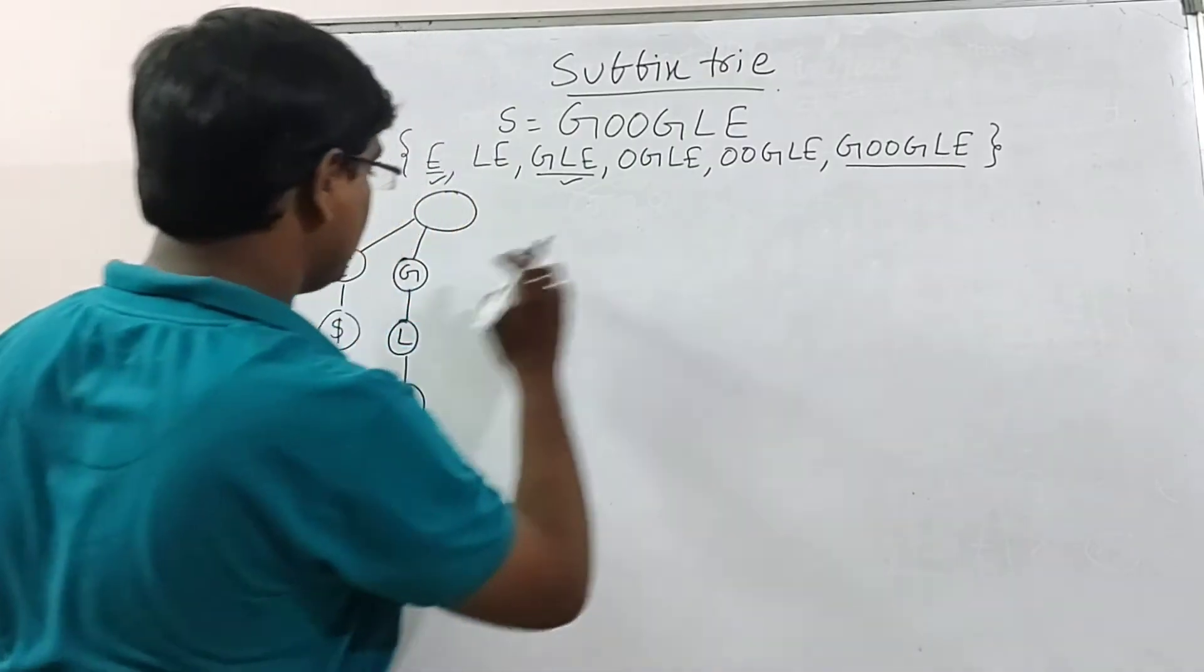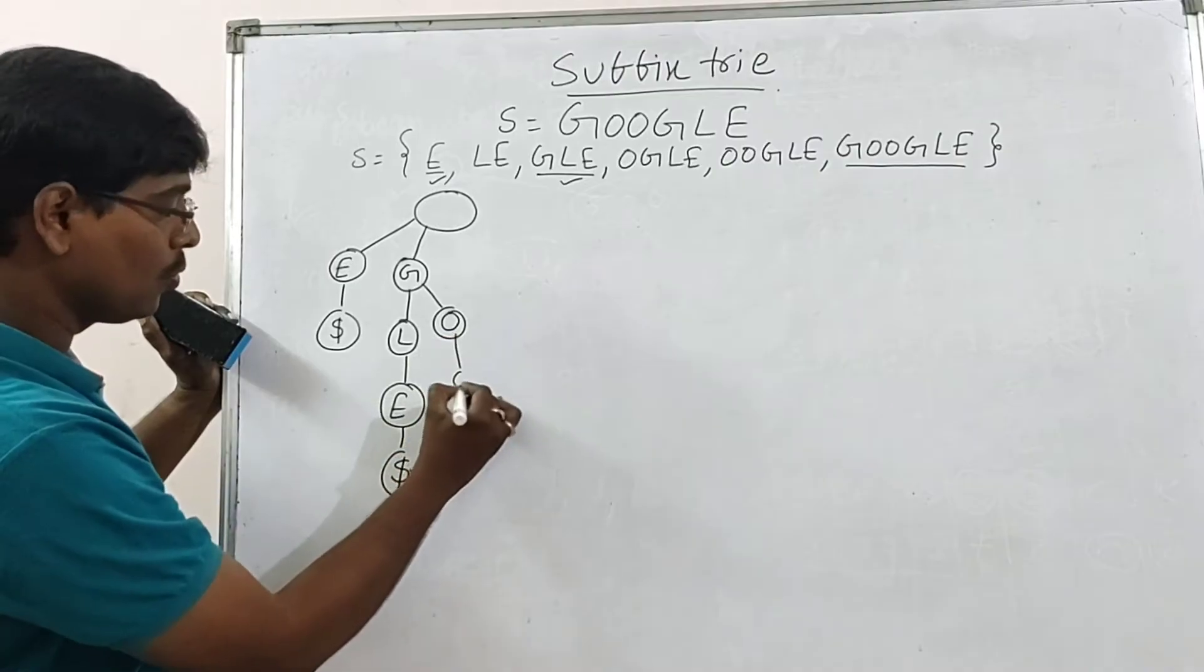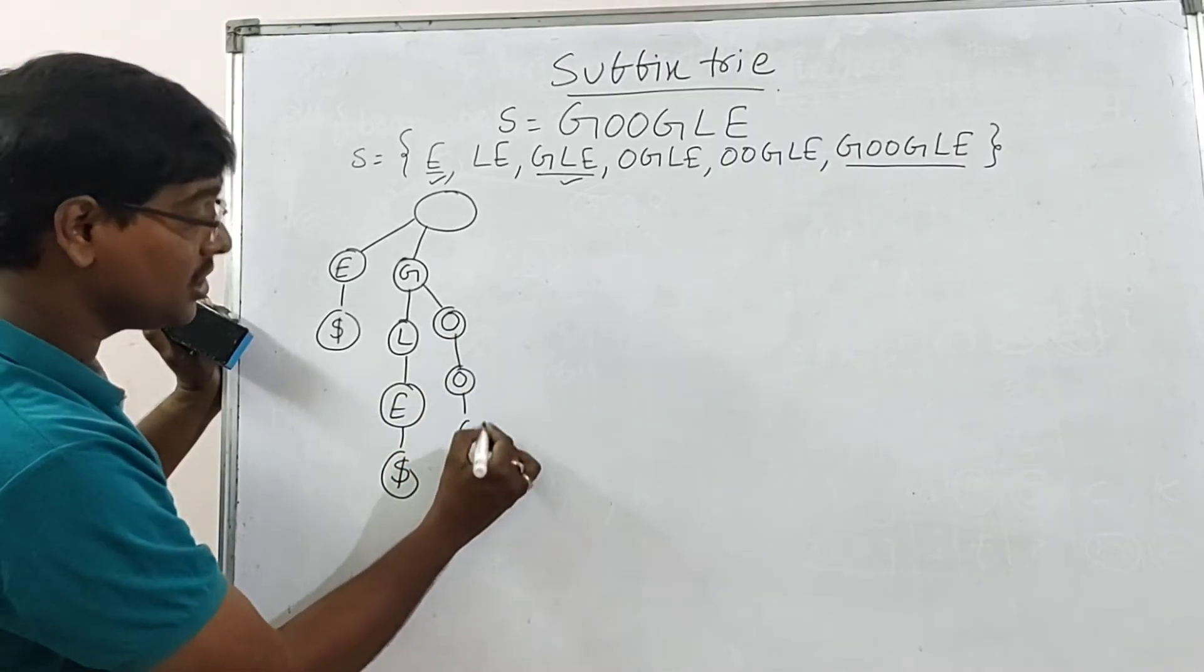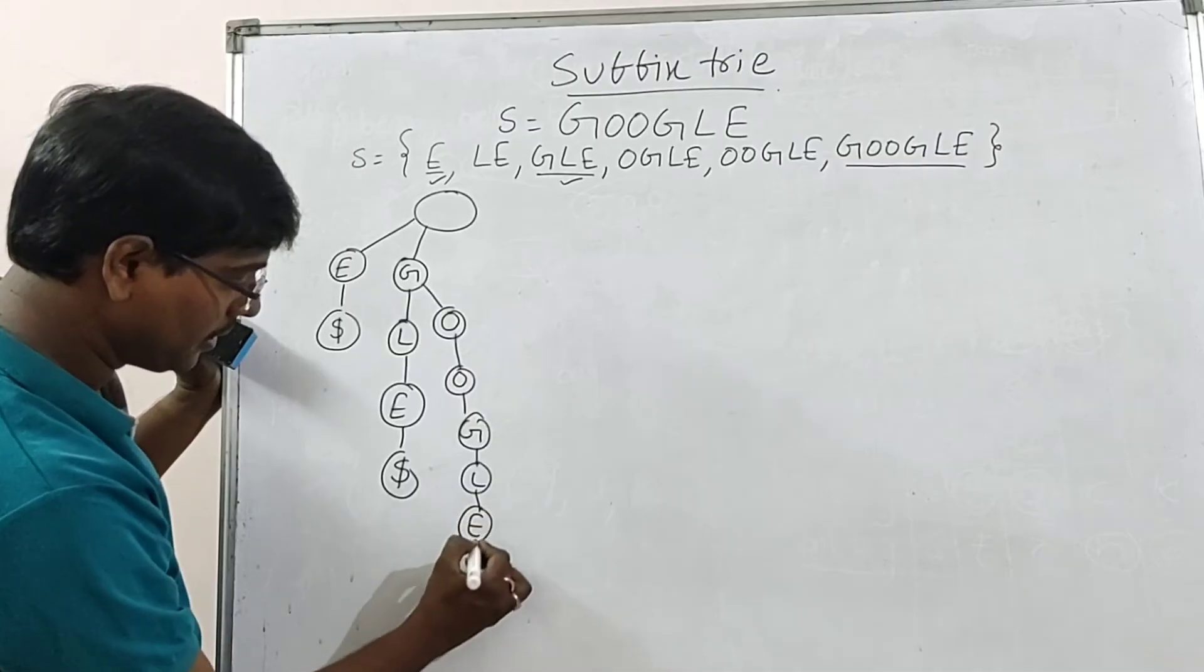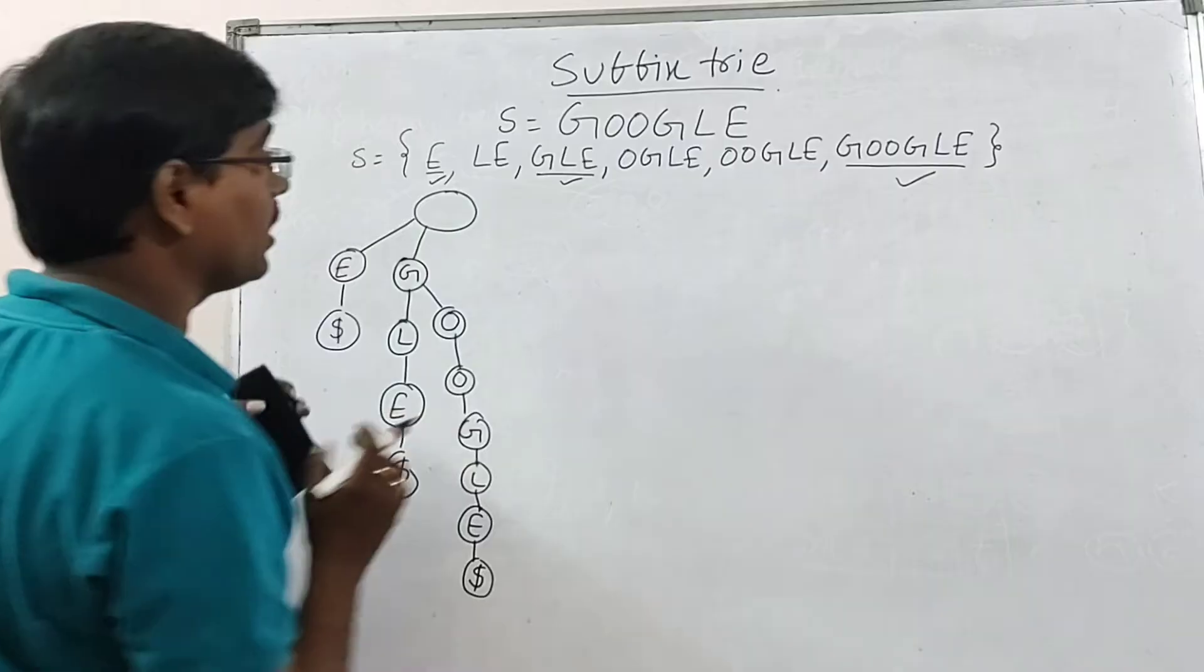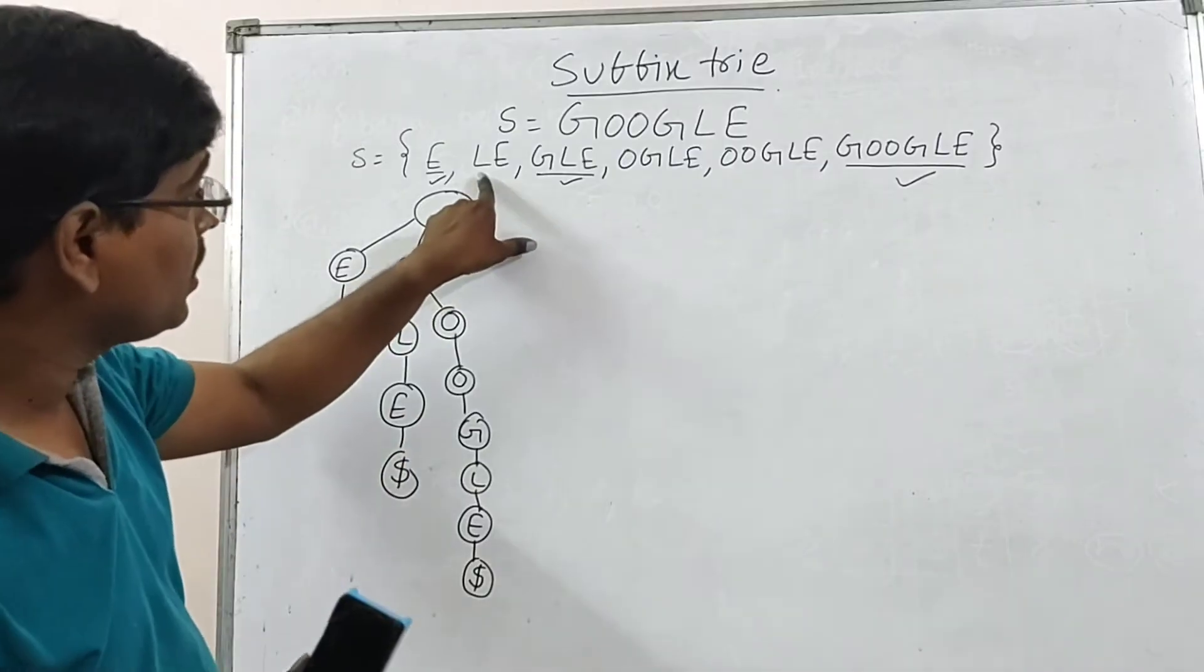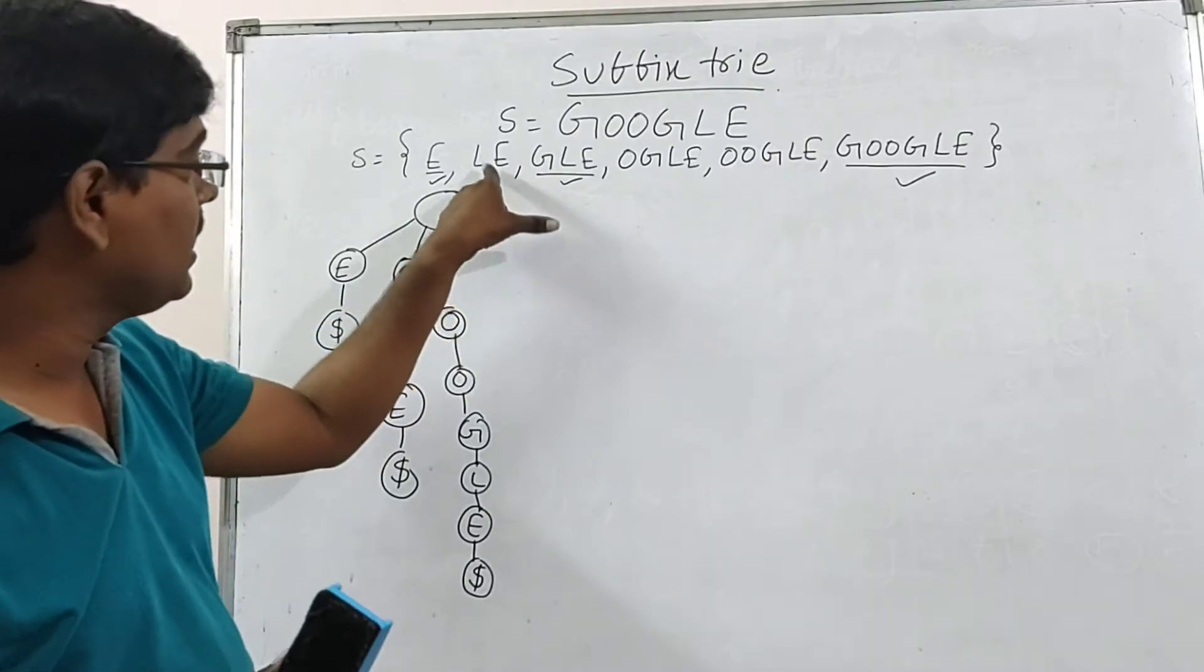This one is completed. Now, this one. G is already available. G-O-O-G-L-E-dollar. So, this is also completed. Now, what is the next one? Among L-E, O-G-L-E, O-O-G-L-E, L is the smallest. Yes or no?